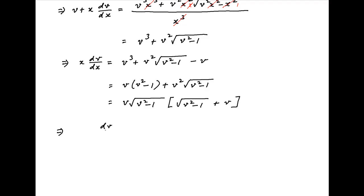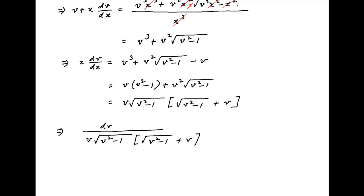Separating the variables, we get dv divided by v times the square root of v squared minus 1 times the quantity square root of v squared minus 1 plus v, is equal to dx upon x.